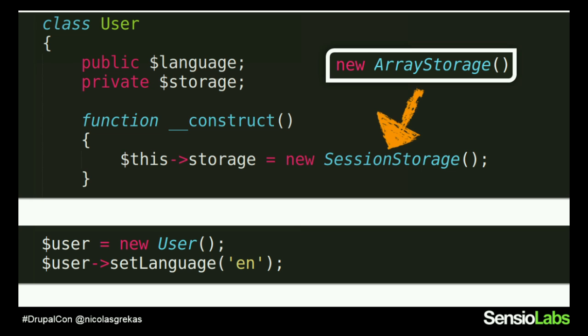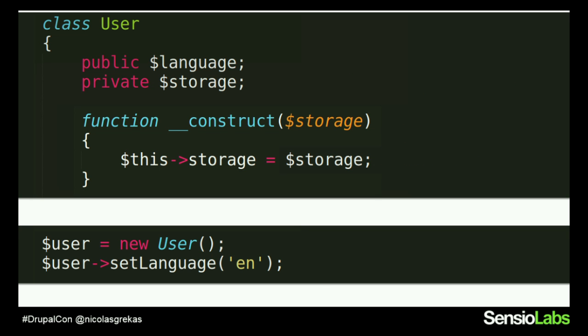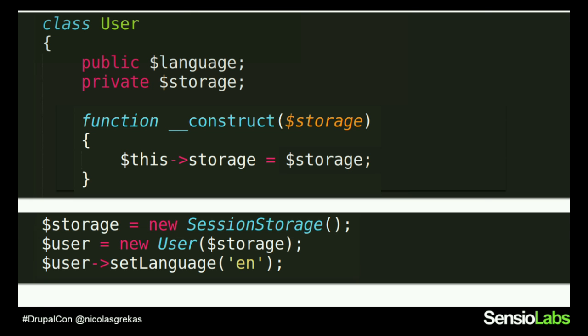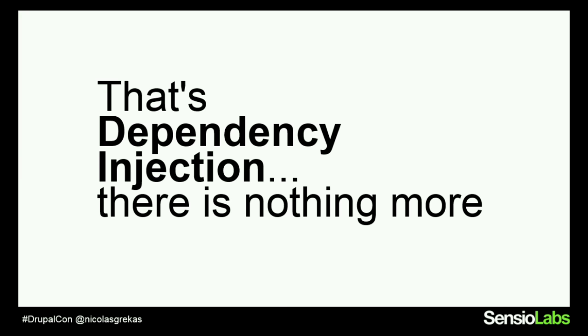The solution is to inject the storage as a constructor argument. Now I configure the storage from outside the User class and give it ready-made to the User class when instantiating it. We create the storage — we could create a Redis storage or array storage, pass the cookie name, and give it ready to the User class. We've decoupled things and can handle many storage engines. That's the design pattern — that's dependency injection. Dependency injection just means not instantiating or hard-coding things inside classes, but giving them ready to your classes.